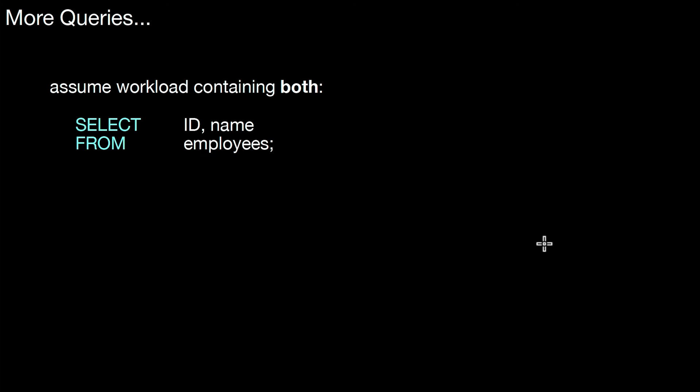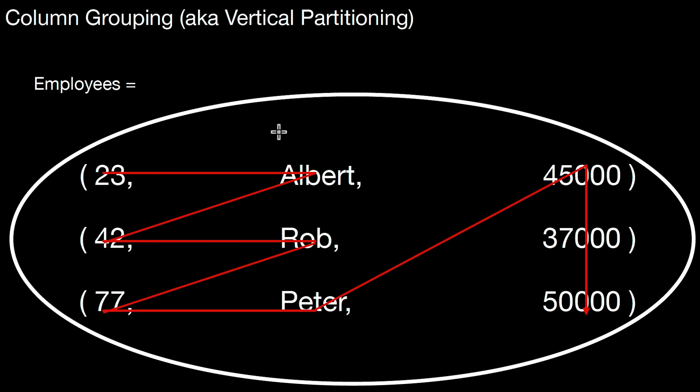Assume a workload containing something like this: id comma name in the select and here's an average city code. So here you might wonder, this is not exactly row layout. Row layout is not optimal because in these kind of queries I'm not interested in the attribute city code. So why not use another variant of a layout and that's called column grouping or vertical partitioning.